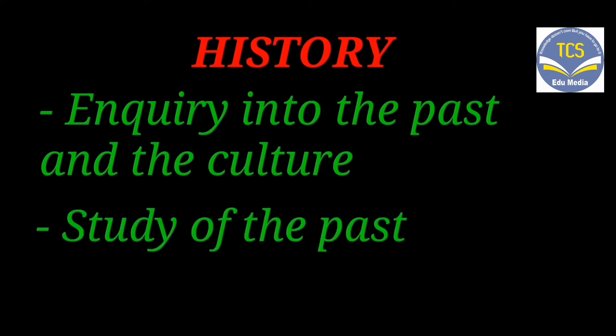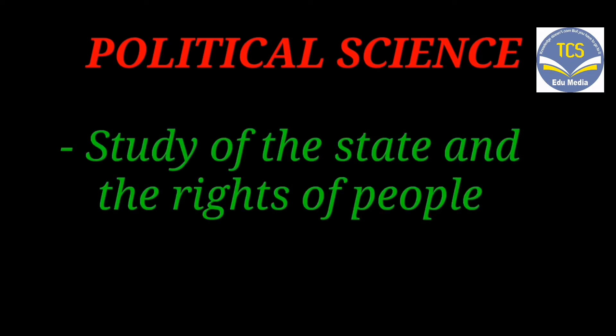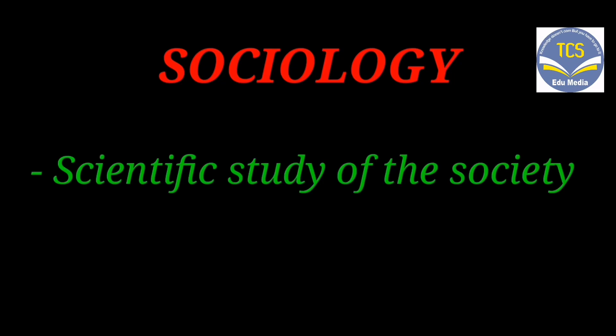What is History? History is the inquiry into the past and culture. In other words, the study of the past is known as History. What is Political Science? Political Science is the study of the state and the rights of people. What is Sociology? Sociology is the scientific study of society.